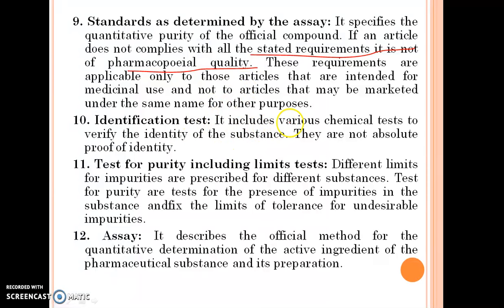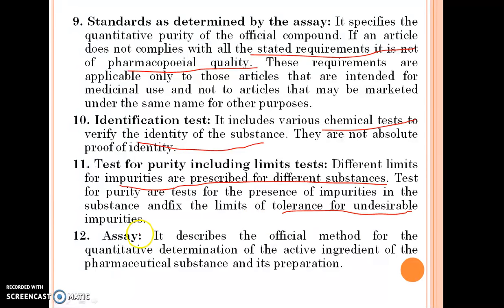Identification test includes various chemical tests to verify the identity of a substance; they are not absolute proof of identity. Tests for purity, including limit tests: different limits for impurities are prescribed for different substances. Tests for purity assess the presence of impurities and fix the limits of tolerance for undesirable impurities. The assay describes the official method for quantitative determination of the product or active ingredient.